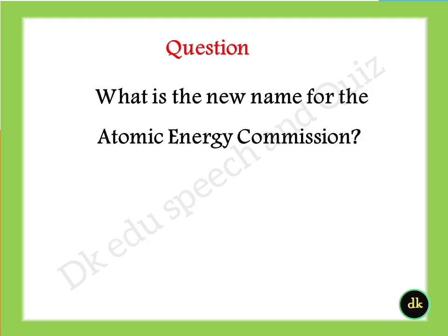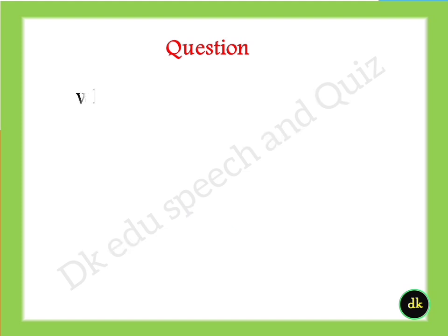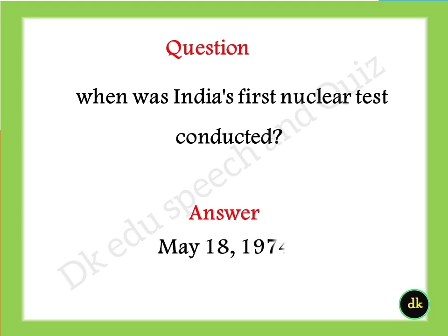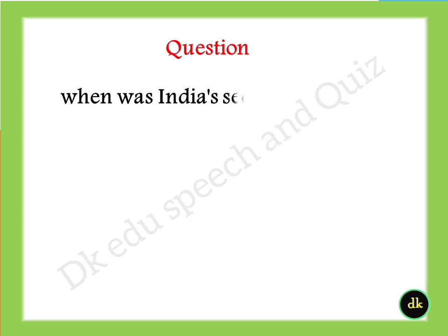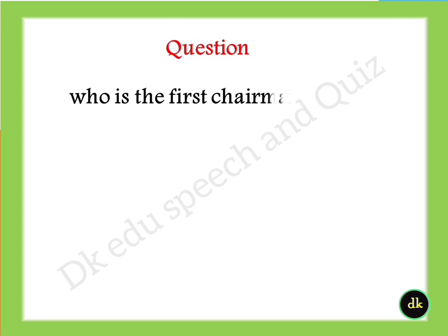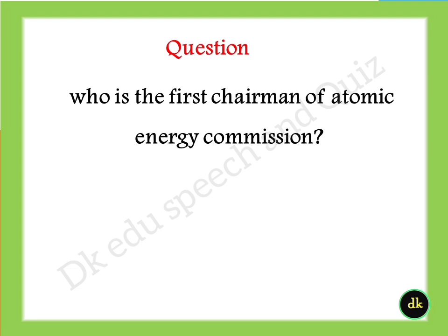What is the new name for the Atomic Energy Commission? Answer: the Nuclear Regulatory Commission. When was India's first nuclear test conducted? Answer: May 18th, 1974. When was India's second nuclear test conducted? Answer: May 11th, 1998. Who is the first chairman of the Atomic Energy Commission? Answer: Homi J. Bhabha.